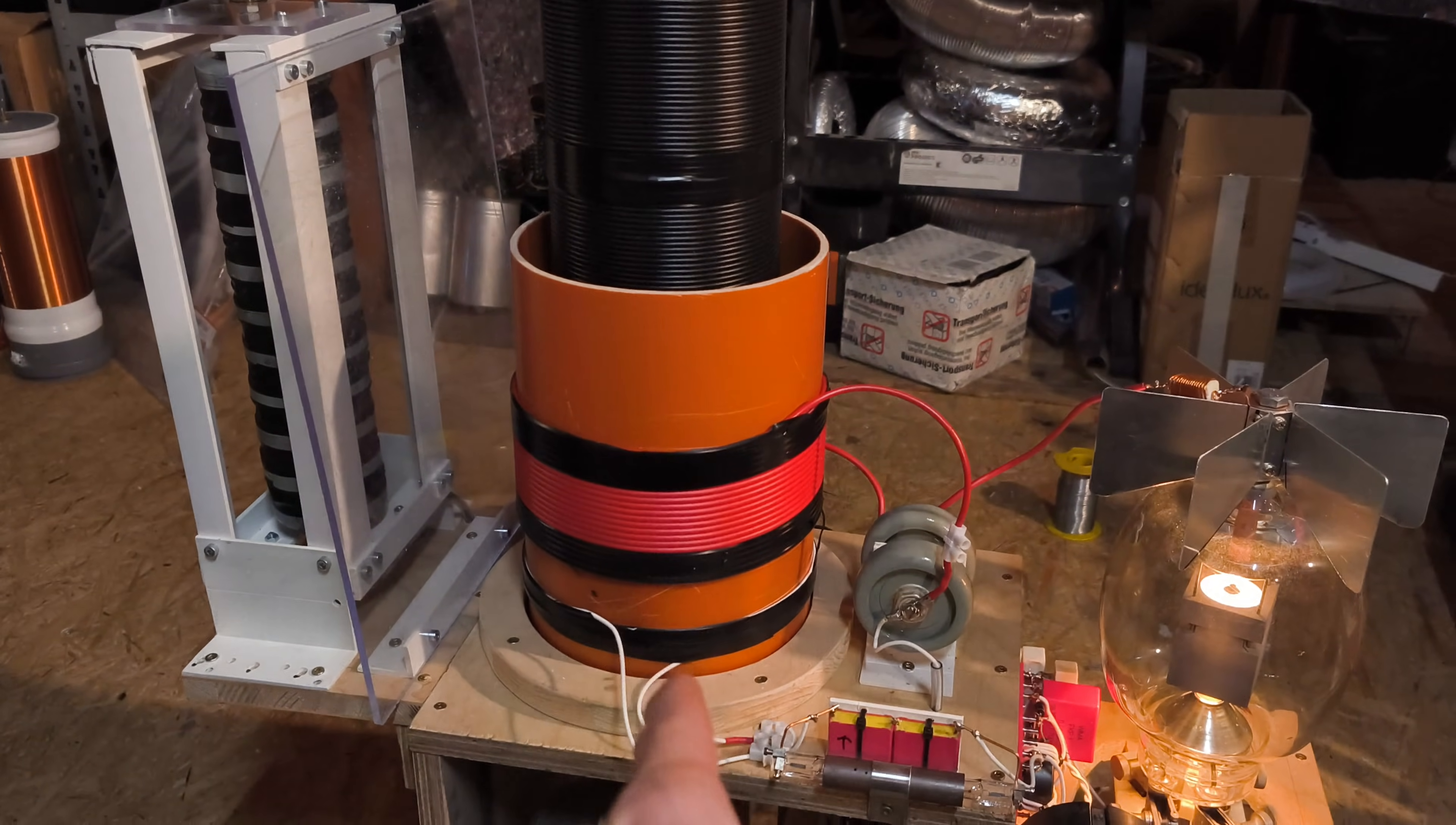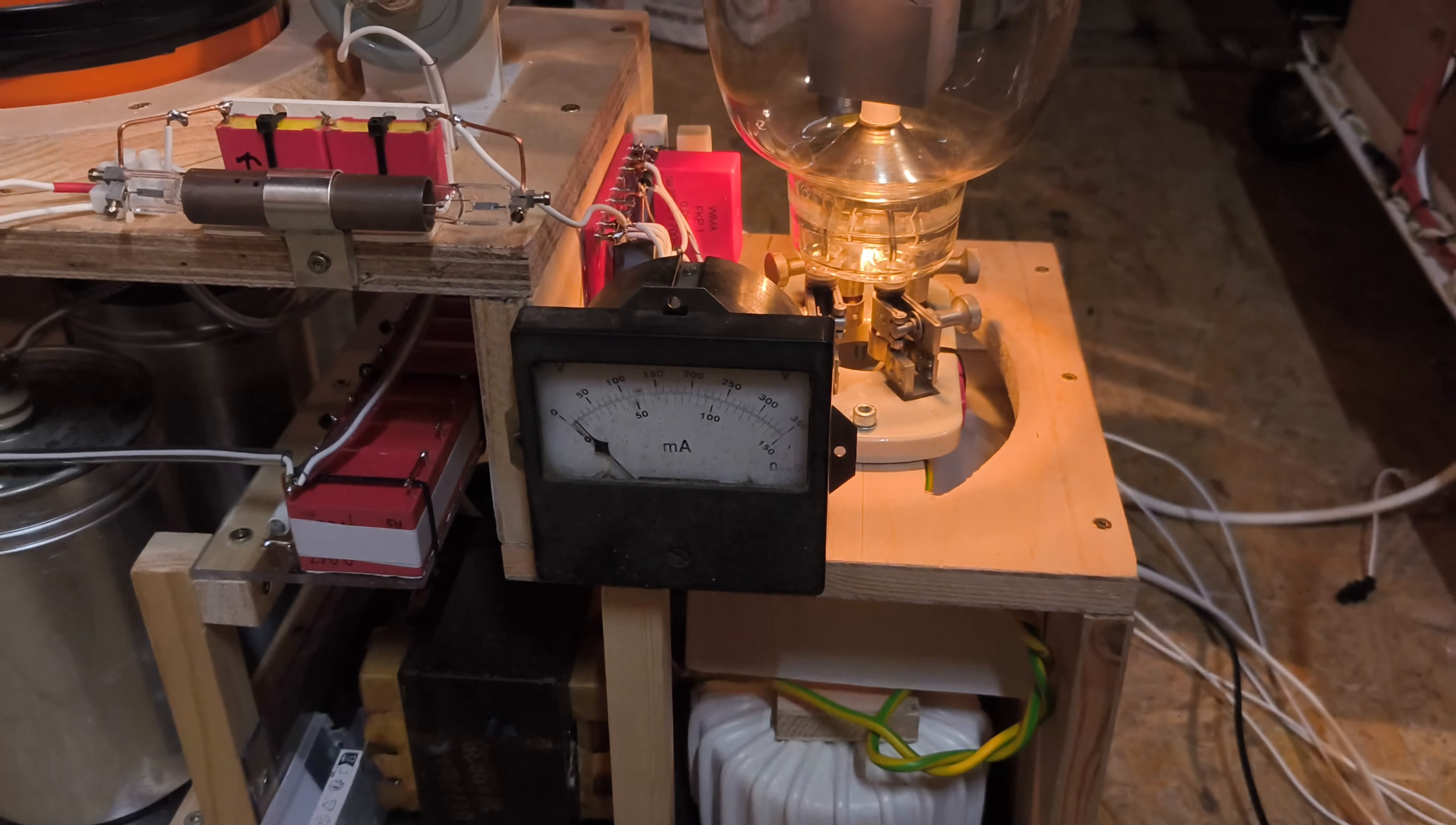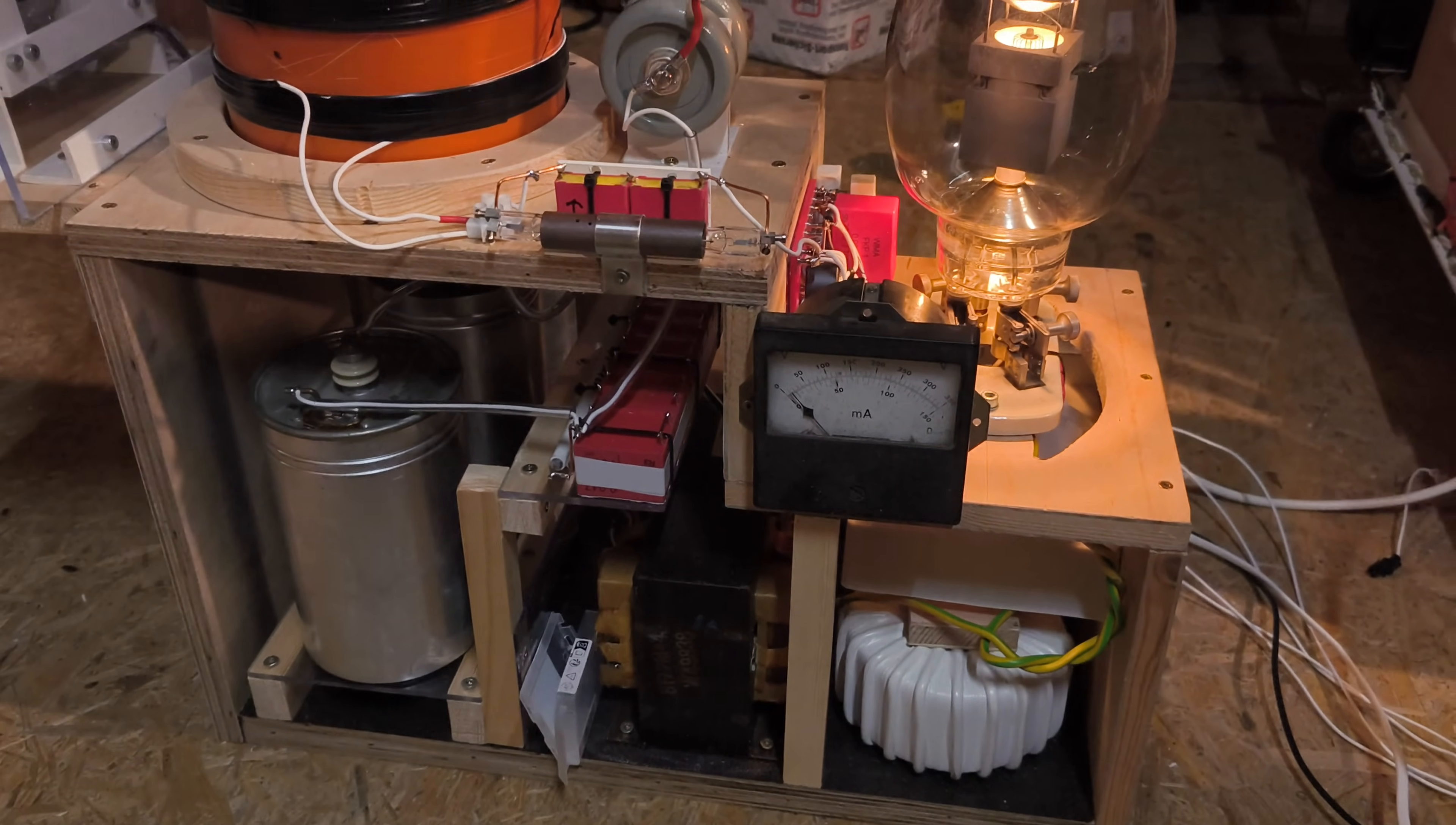Here you see the primary coil, feedback coil, feedback system. I installed an ampere meter. It's a DC ampere meter. It's a little bit unfortunate. I had to build a circuit around it to read it really roughly, but it works.